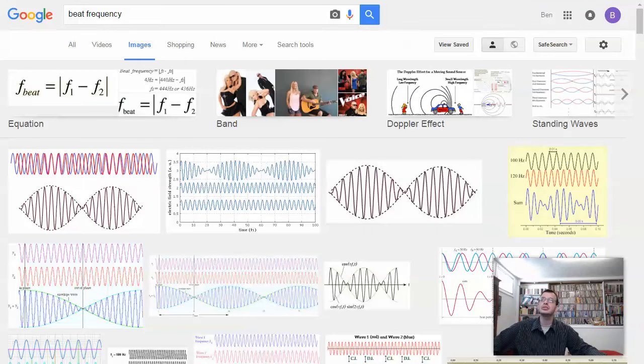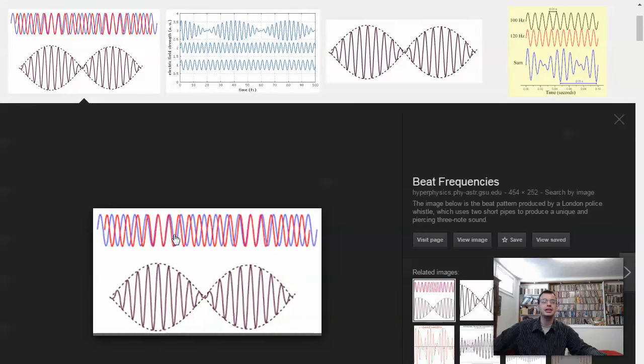So we're going to look at images. This is a good example right here. So the idea here is you have two slightly different frequencies, and they'll gradually build up constructive interference, and then it'll gradually die away. So you'll hear two beats here, assuming this is one wavelength.